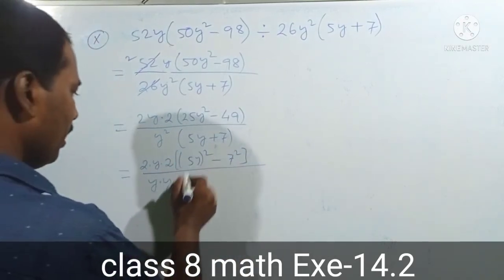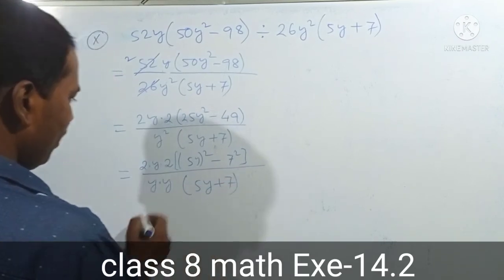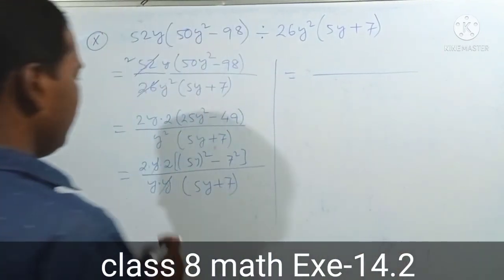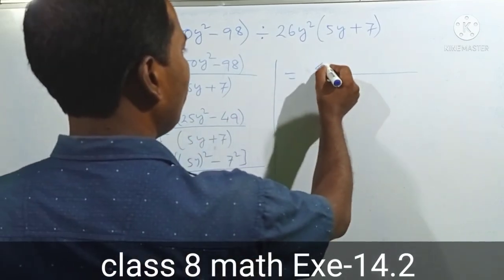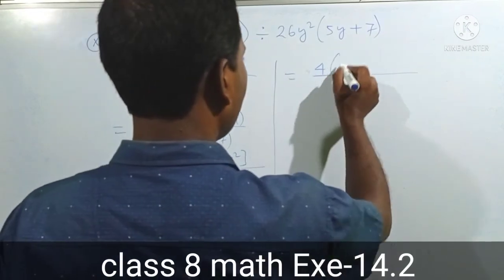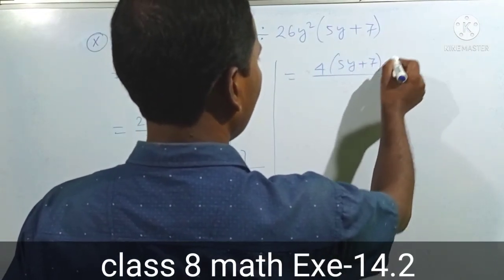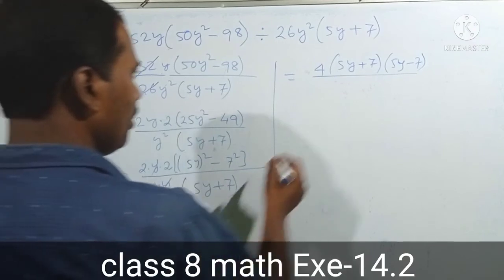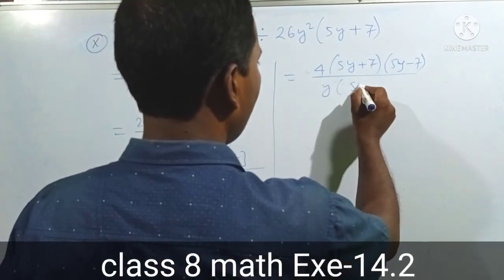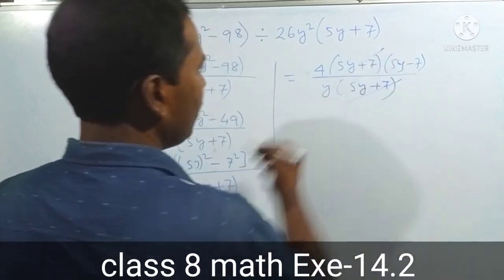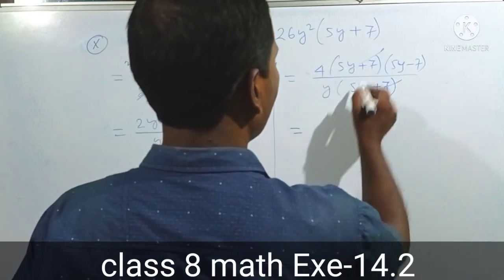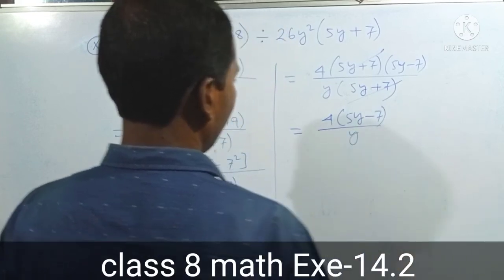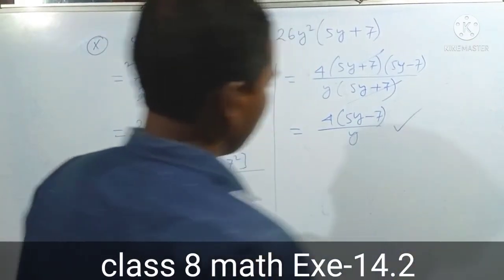So 5y plus 7. If y equals 7, then a squared minus b squared equals a plus b into a minus b. Here, 5y minus 7 times a plus b into a minus b. So a squared minus b squared means a plus b into a minus b. Therefore 5y plus 7 times 5y minus 7, giving us the answer equal to 6 after cancellation with 26y squared in the denominator.